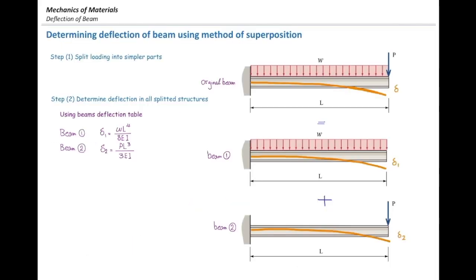If I plug the values of that here, I have determined deformation of these two simplified beams. Now, how much is the total deformation in the original beam? That would be simply sum of these two deformations. So, that would give me the total deformation.